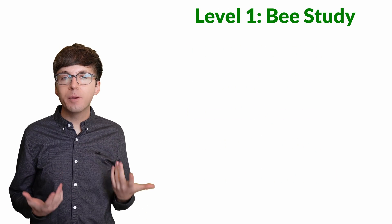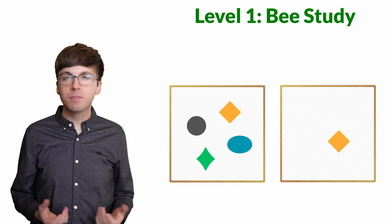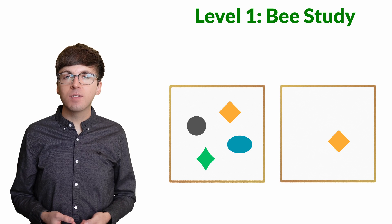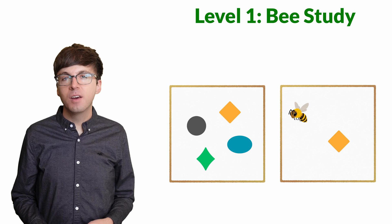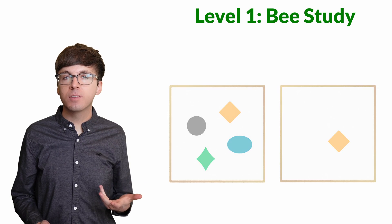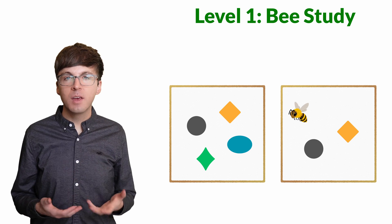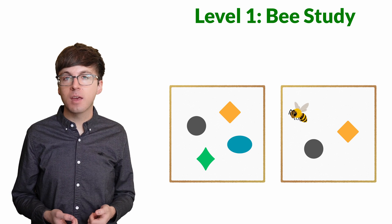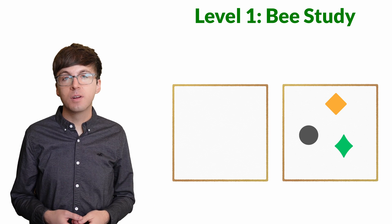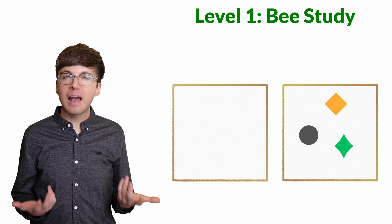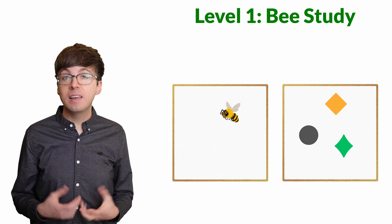For level one, let's see what bees understand about zero. Researchers printed sheets with different numbers of objects on them. They trained bees to land on the sheet with the fewest objects by rewarding them with sugar. Once the bees learned the rule, they tested them on comparisons like two versus four. The bees weren't perfect, but they did much better than random guessing. Then the researchers tested the bees on comparisons like three versus zero. Would the bees understand that the absence of any shapes is actually a quantity that's less than three? They did.